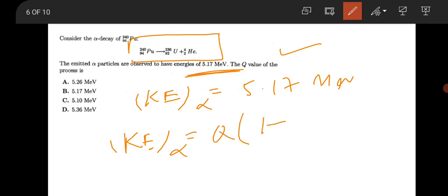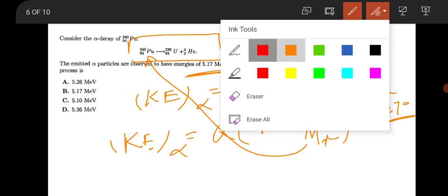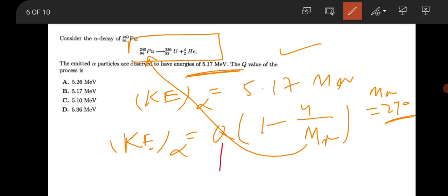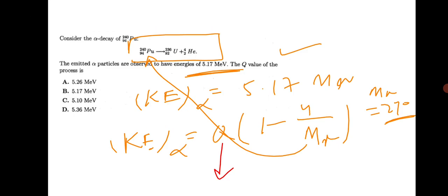Direct, you know kinetic energy of alpha particle is equal to Q times (1 - 4/mx), and this mx is the mass of this plutonium, that is 240. So here mx is equal to 240. Put this value and you calculate what will be your Q value. This is the formula.